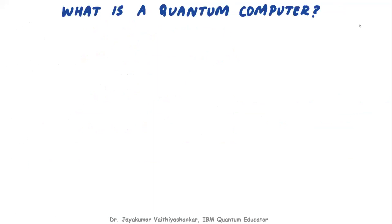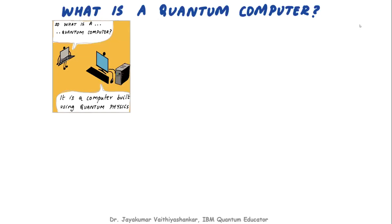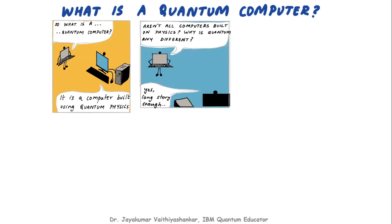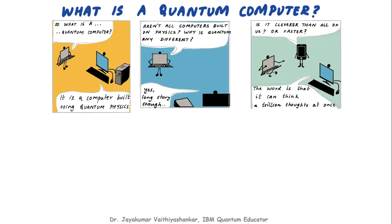So what is a quantum computer? Is it a computer built using quantum physics? They're all computers built on normal physics, but how is quantum different? So it can do a trillion thoughts at a single time. This is the key point — it is so powerful, exceptionally good when compared to normal and classical computers.